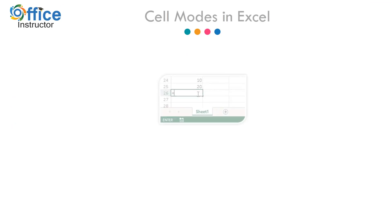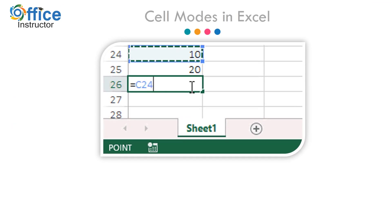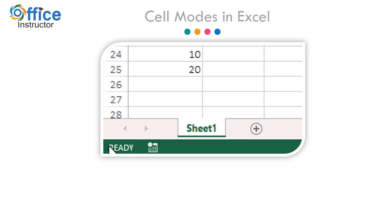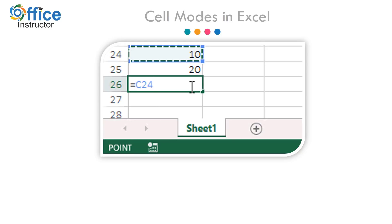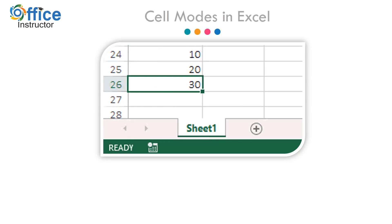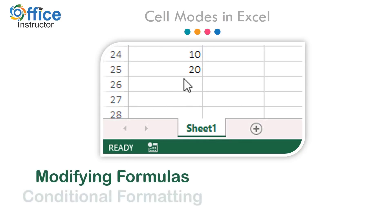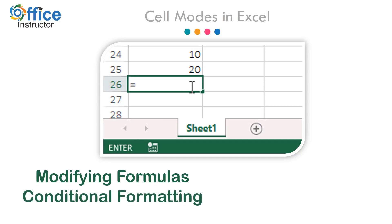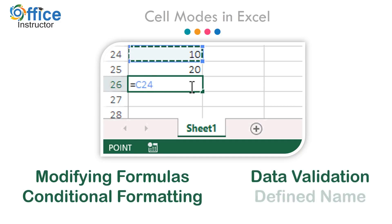In any Excel spreadsheet there are over 17 billion cells. Each cell is in one of four cell modes. The cell mode shows up in the lower left corner of the Excel window, the status bar. Understanding cell modes helps when creating or editing formulas, conditional formatting, data validation, and defined names.